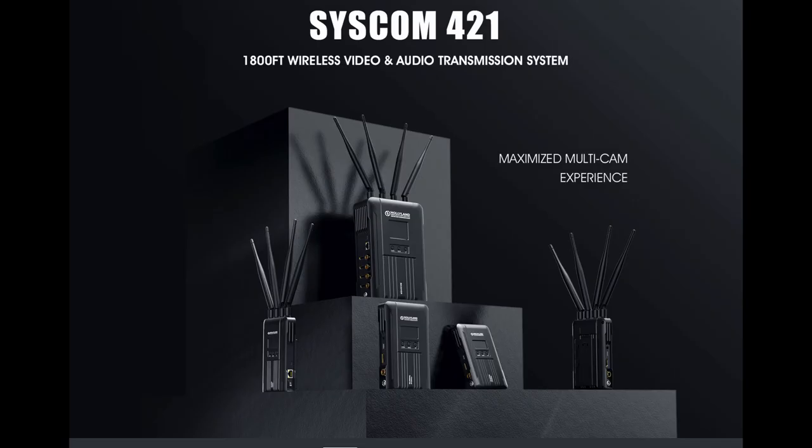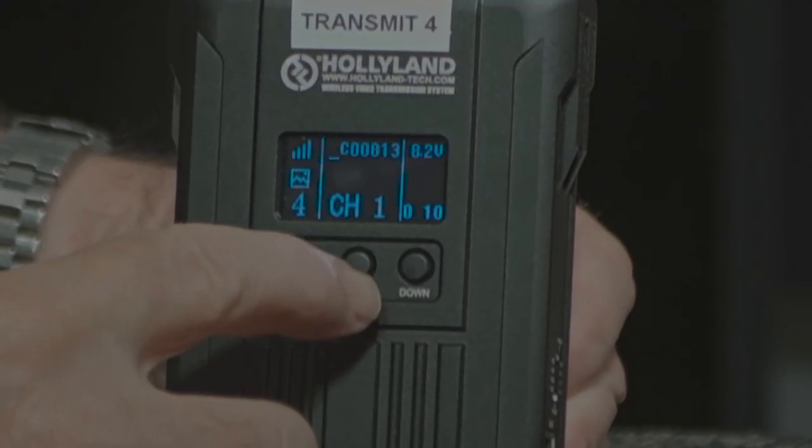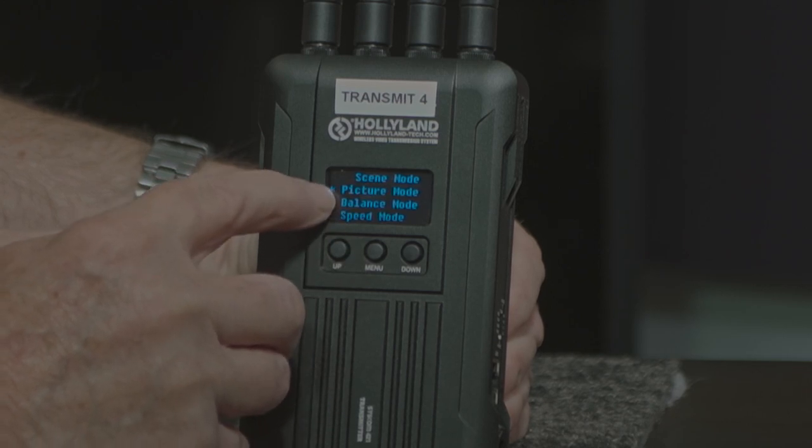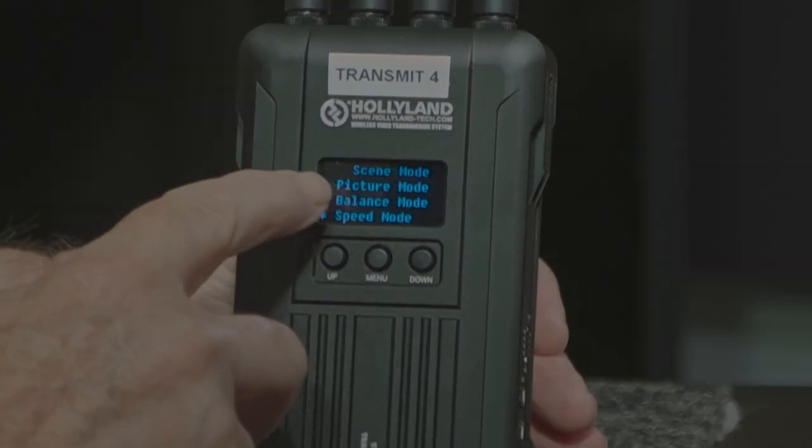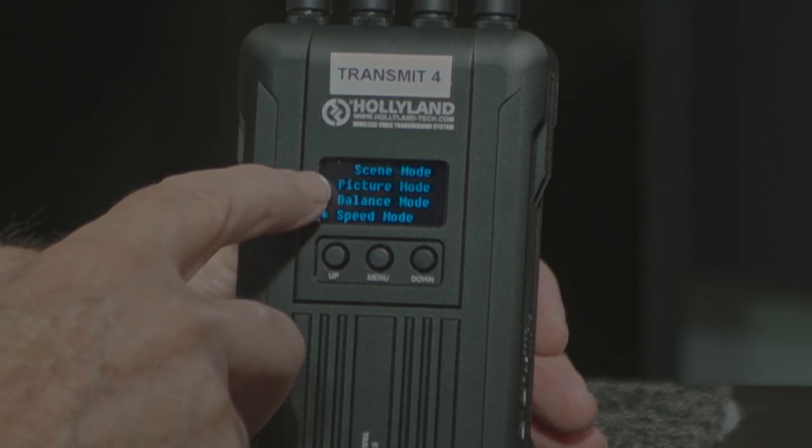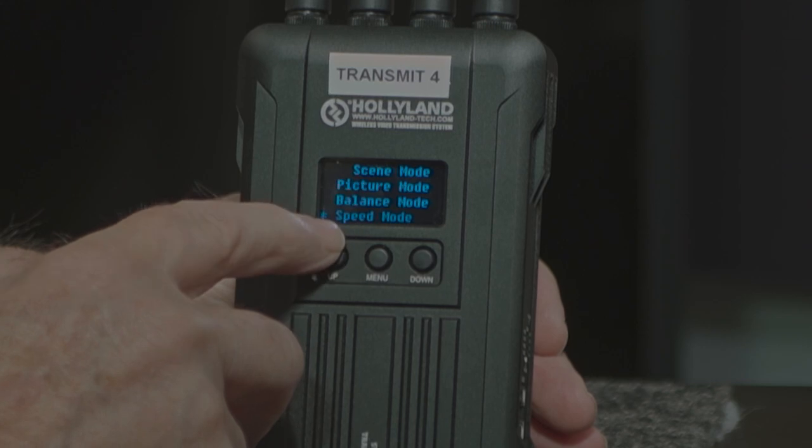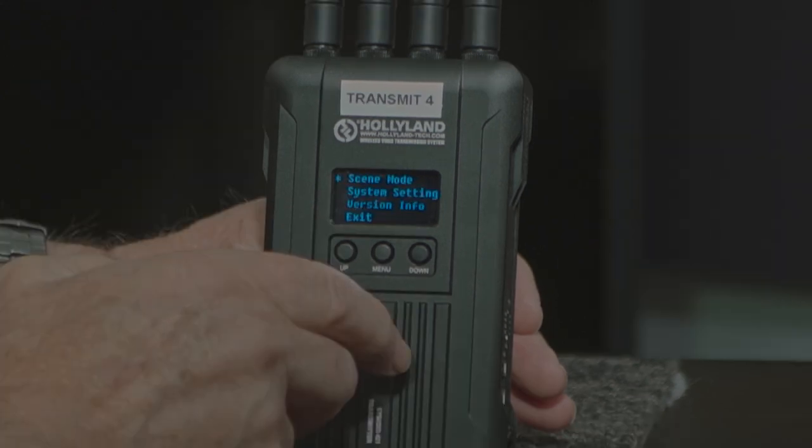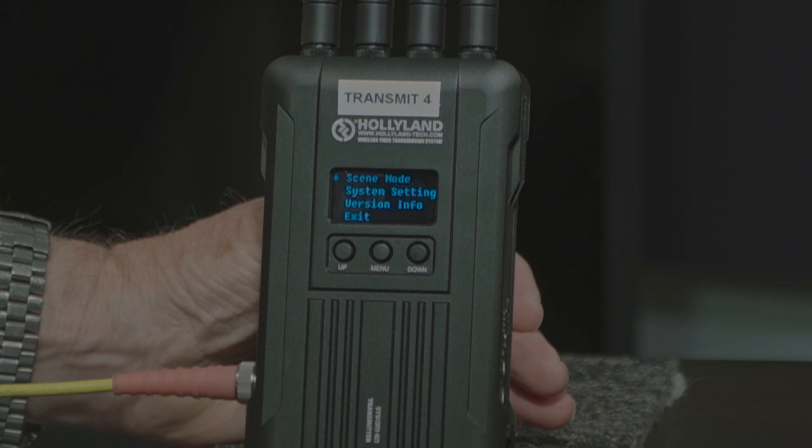The Holyland Syscom 421 has a few setup procedures in the transmitter and I'm going to have a look at the differences this may make. There are some different settings in the menu. Scene mode has picture mode, balance mode and speed mode. I would imagine the picture mode is for the best quality picture. A balance mode is for picture quality and speed and speed is purely for speed. The manual doesn't explain whether you need to reset the whole system or not.